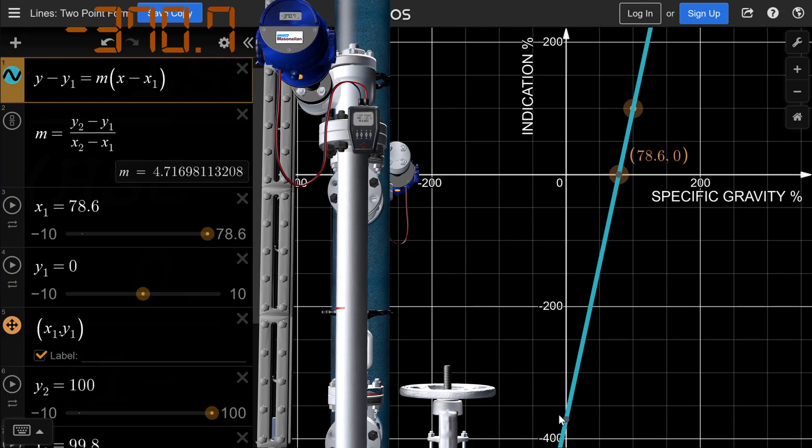The percentage indication still counts down, while the milliamps freeze at the minimum, which is 3.8, representing minus 1.25% at the DCS. That's why this check must be done in the field.